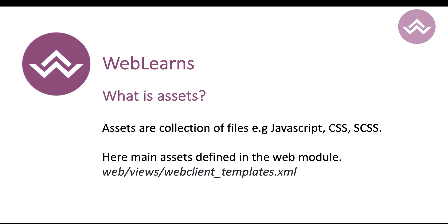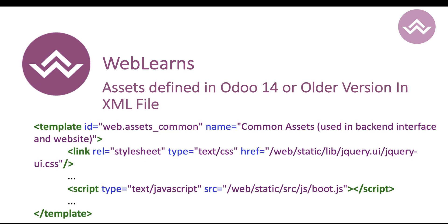Don't worry about this file structure — we will cover it in a later session. While creating a JavaScript framework, one very important thing to know is assets. Assets is nothing but a collection of files such as JavaScript, SCSS, and CSS. The core assets functionality is available in the web module inside the views, in a file named web_client_templates.xml.